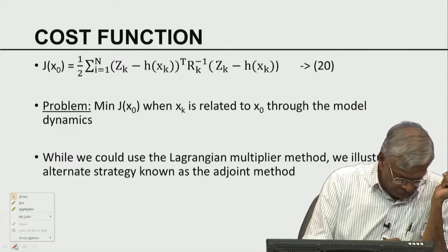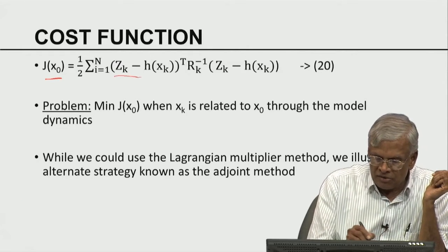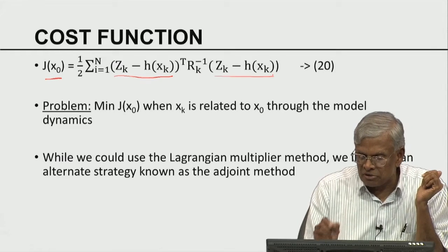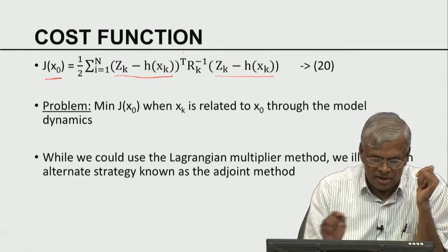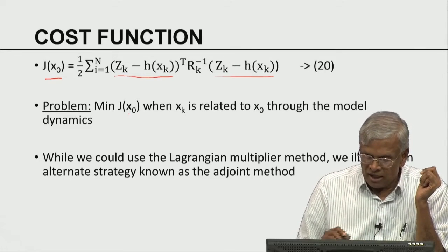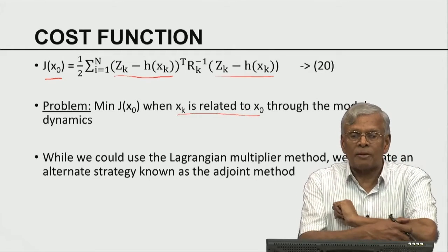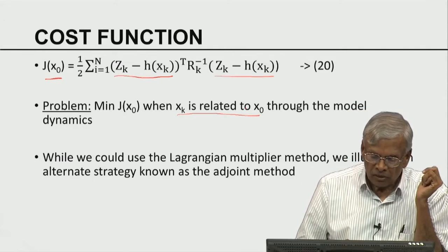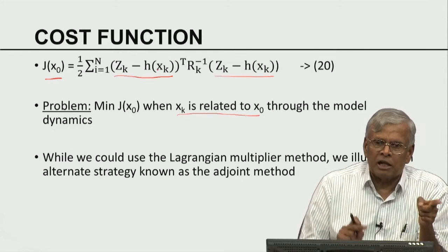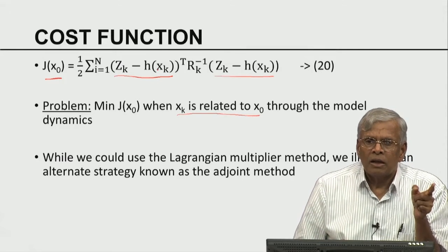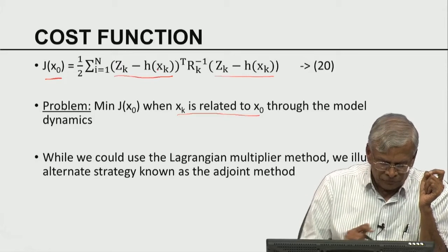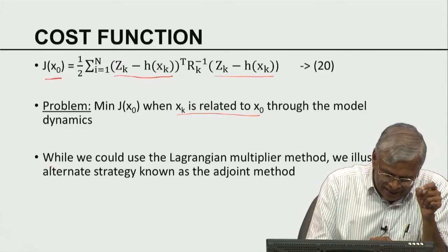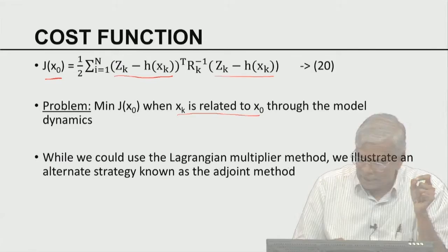The cost function J(x₀) is given by the sum over k of (zₖ - H(xₖ))ᵀ Rₖ⁻¹ (zₖ - H(xₖ)), where zₖ - H(xₖ) is the forecast error. This is a weighted sum of squared errors. The problem is to minimize J(x₀), where xₖ is related to x₀ through the model dynamics — so it is an implicit minimization problem. In the linear case, we could explicitly replace xₖ with Mᵏx₀, but in the nonlinear case it is much more difficult, and we need to handle this with greater delicacy.